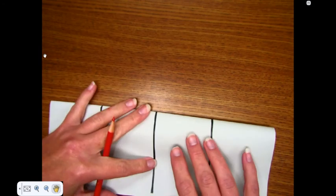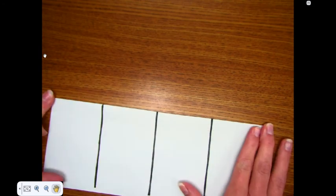Fold it hot dog style. If you don't have the colored pencils, that's okay. You can just draw the pictures and shade them.